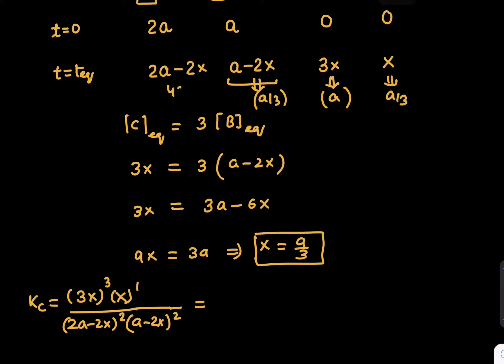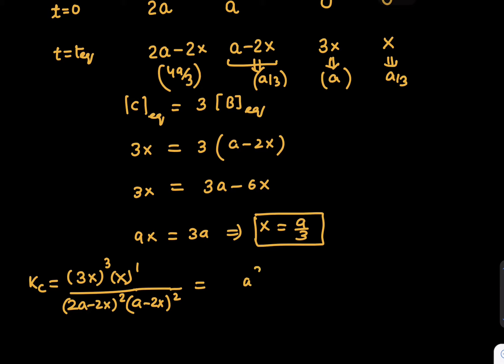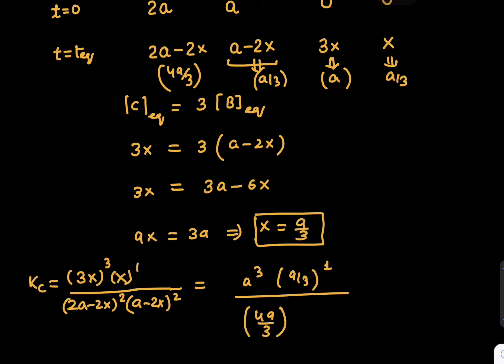I think we can put all the values. The result we have is a³ times (a/3)¹ divided by (4a/3)² times (a/3)². If you see, all a will get cancelled.